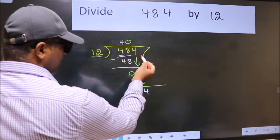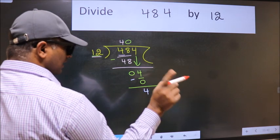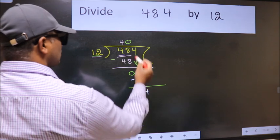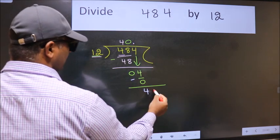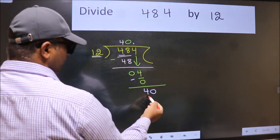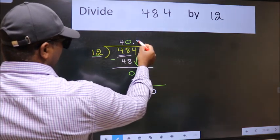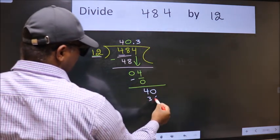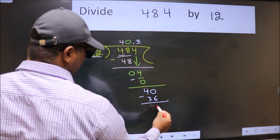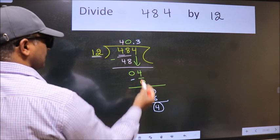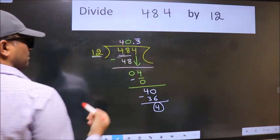Over here we did not bring any number down. And 4 smaller than 12, so now we can put dot and take 0. So 40. A number close to 40 in 12 table is 12 threes, 36. Now we subtract. We got 4 again. That means we get bar on this number.